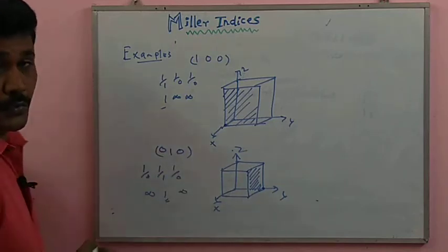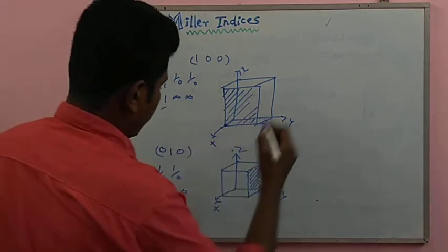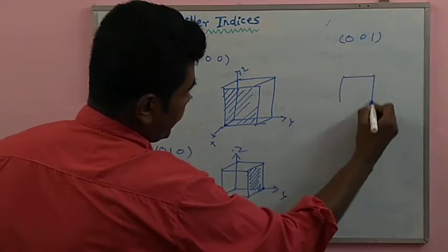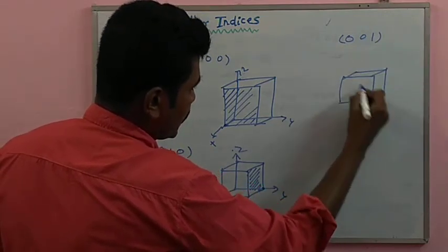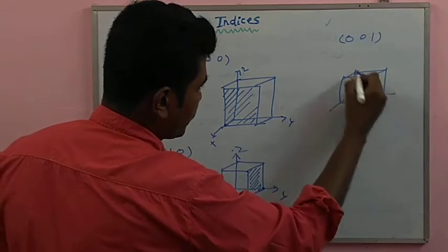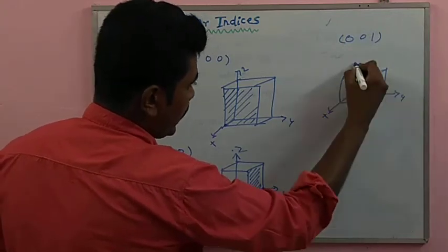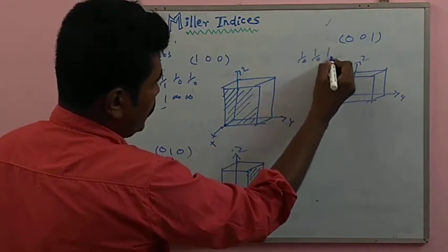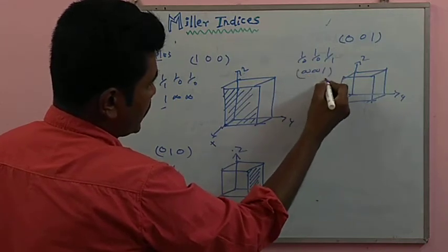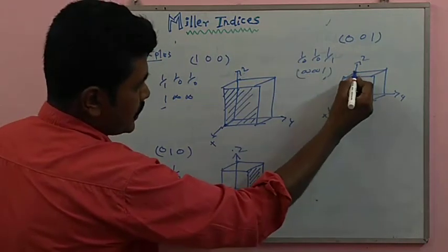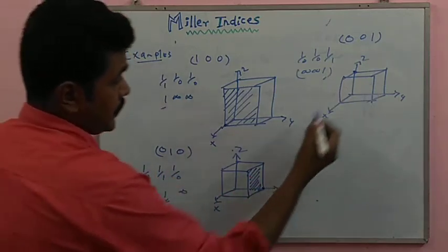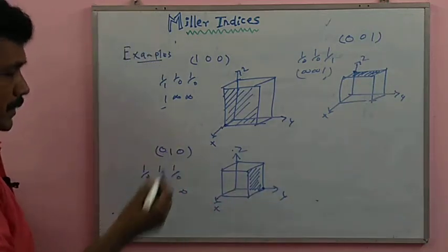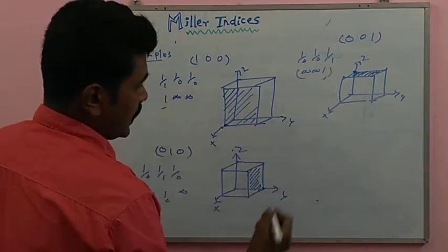Another type of plane: (0 0 1). In this cubic structure with x, y, and z axes, the reciprocals are 1/0, 1/0, 1/1, giving infinity, infinity, and 1. The z-axis distance is one unit maximum, while the remaining axes are infinity. We shade that particular portion for the (0 0 1) plane.